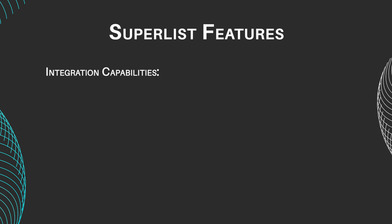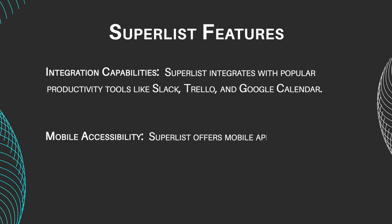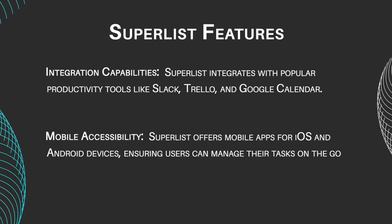Integration Capabilities: Superlist integrates with popular productivity tools like Slack, Trello, and Google Calendar, allowing users to synchronize their tasks and workflows across multiple platforms. Mobile Accessibility: Superlist offers mobile apps for iOS and Android devices, ensuring users can manage their tasks on the go with ease and convenience.